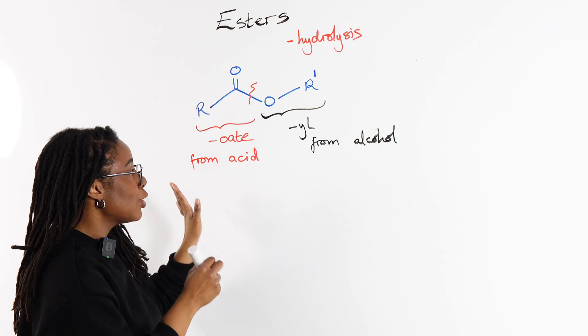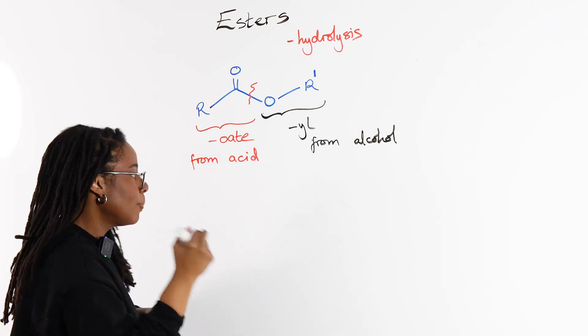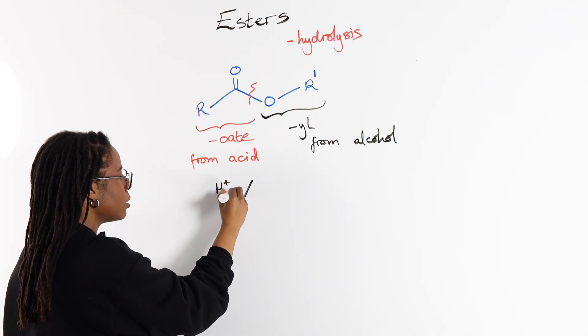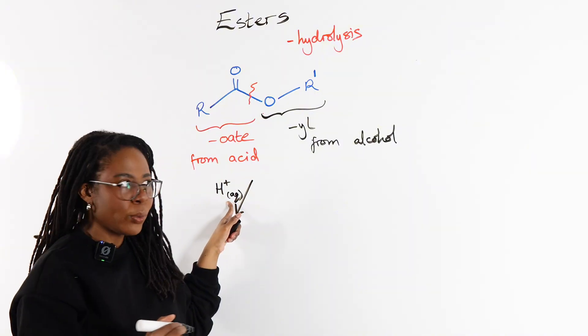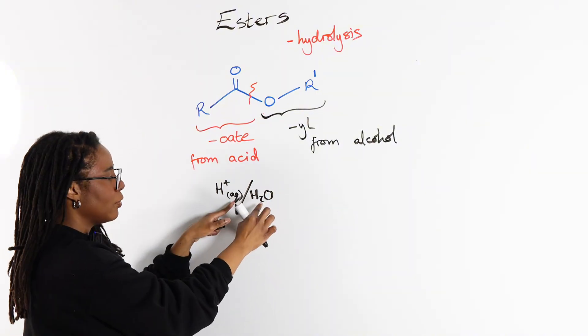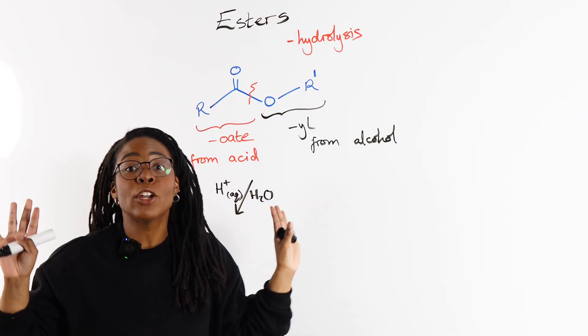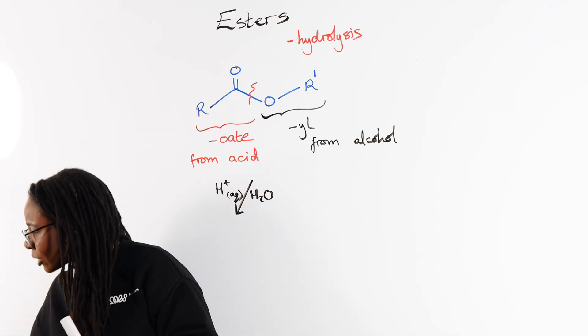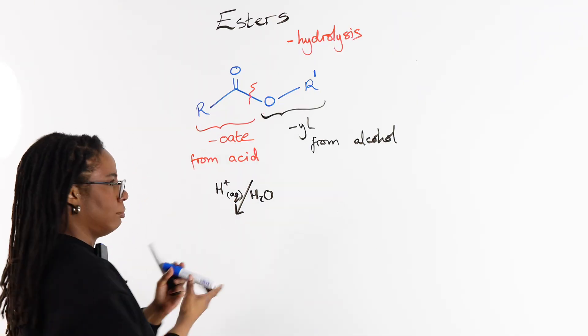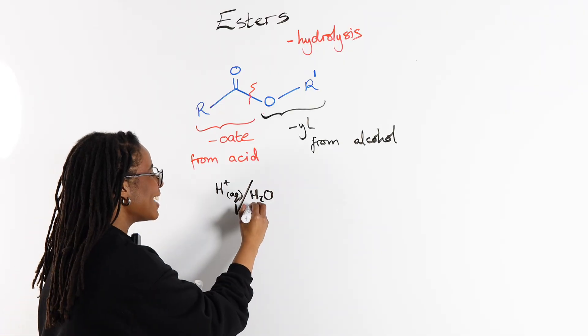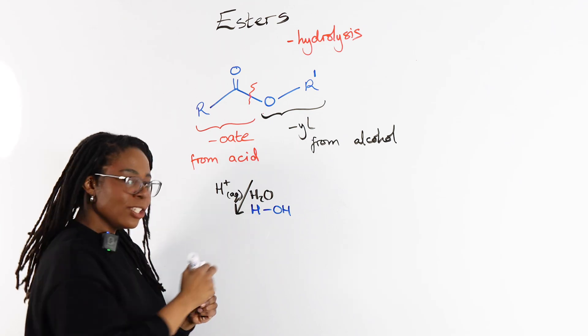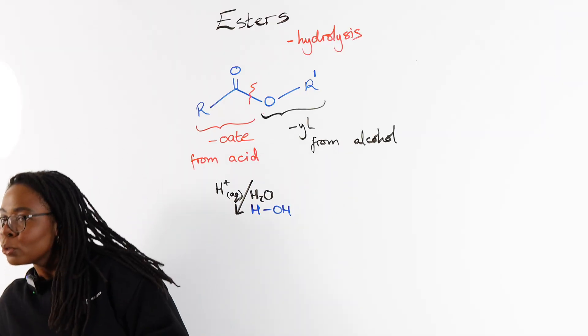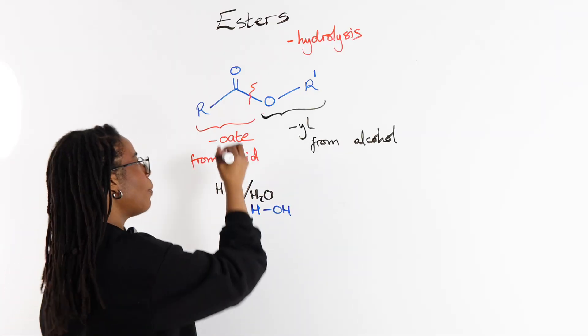So let's look at both. If we've got acidic conditions, that means we're going to need an acid—some H+ ions—and of course, we also need water. When we break this bond, if we think of water as HOH, then all we are really doing is giving the OH part back to the carboxylic acid.